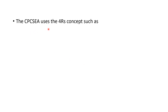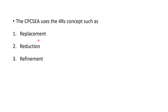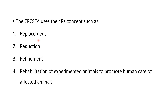CPCA uses the four R concept. The first is replacement, which refers to technologies or approaches that directly replace or avoid the use of animals in experiments. The second is reduction, which refers to methods that minimize the number of animals used per experiment. The third is refinement, which refers to methods that minimize the pain, suffering, distress, or lasting harm experienced by research animals. The fourth is rehabilitation of experimented animals to promote humane care of affected animals.